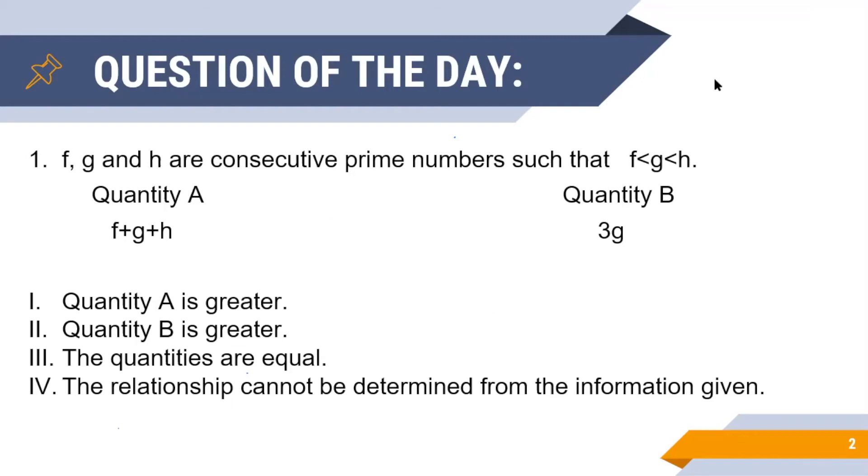So let us begin by choosing f equals 2. Let us call this case 1. Since f equals 2, we know g and h must equal 3 and 5 since they are three consecutive prime numbers.